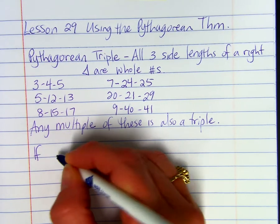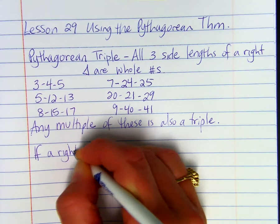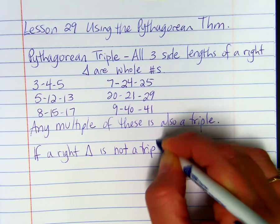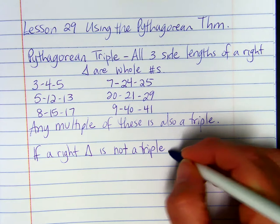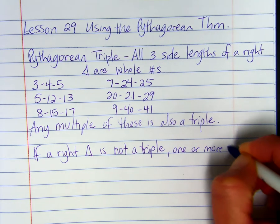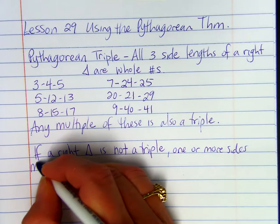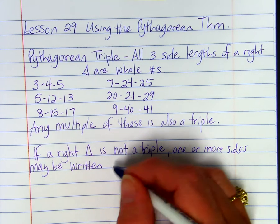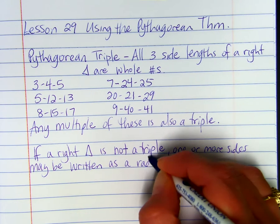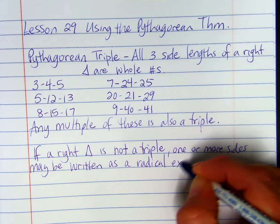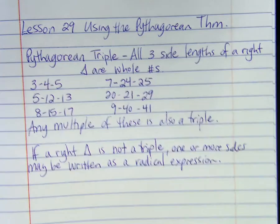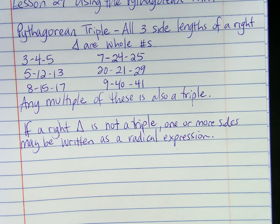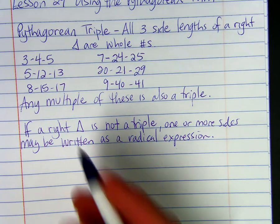If a right triangle is not a Pythagorean triple, one or more sides may be written as a radical expression. Unless you're told to round to the nearest decimal point, leave the side length as a radical expression.